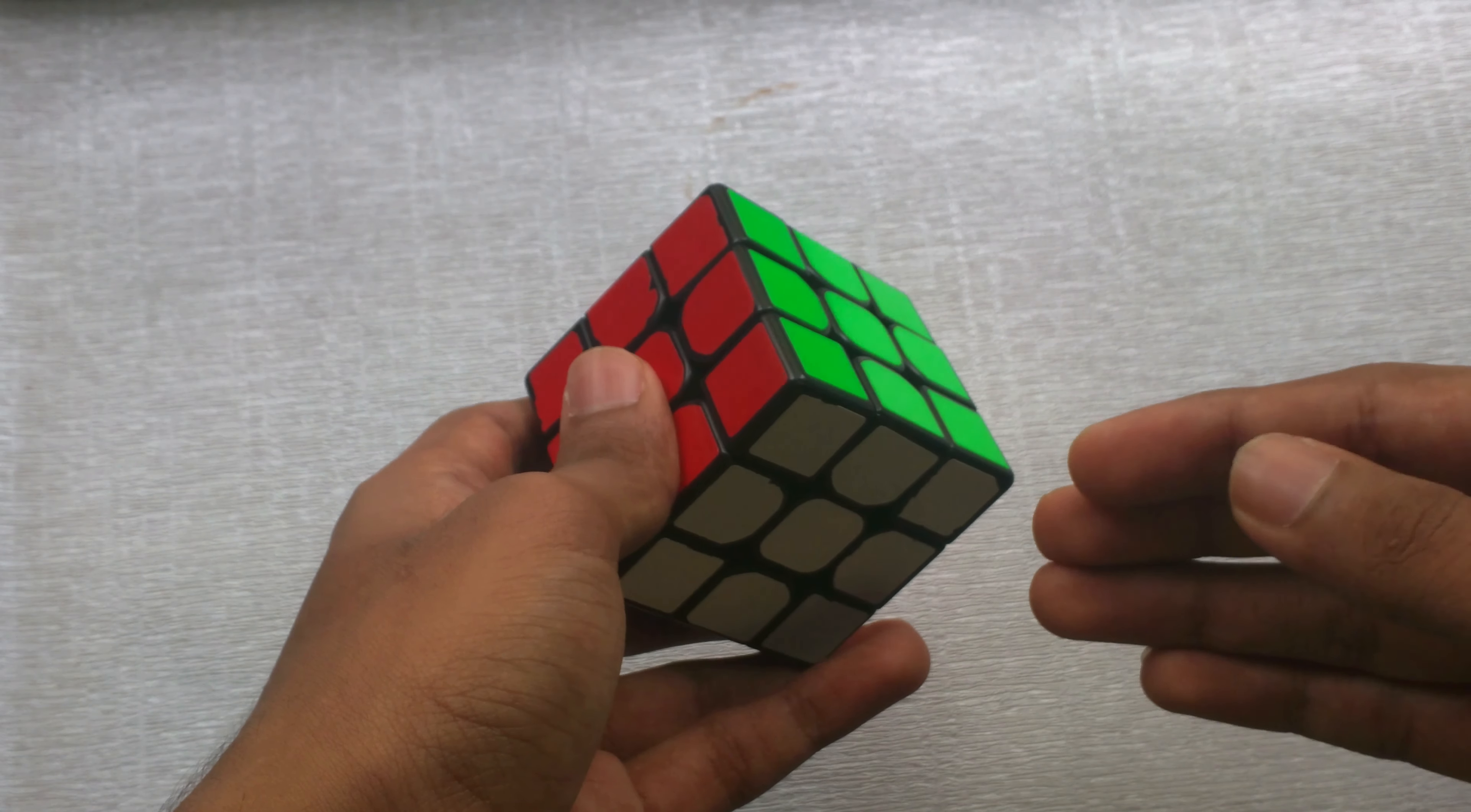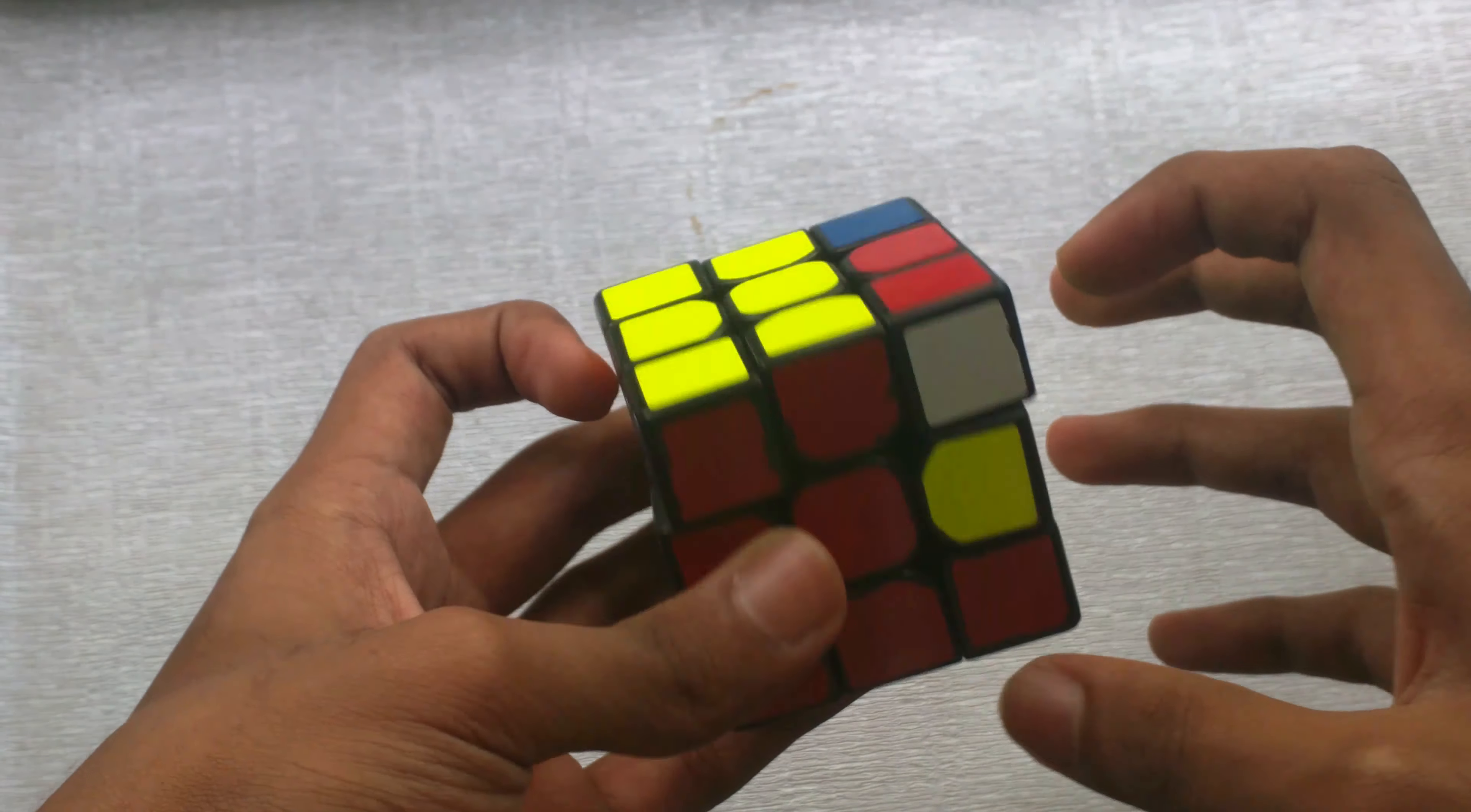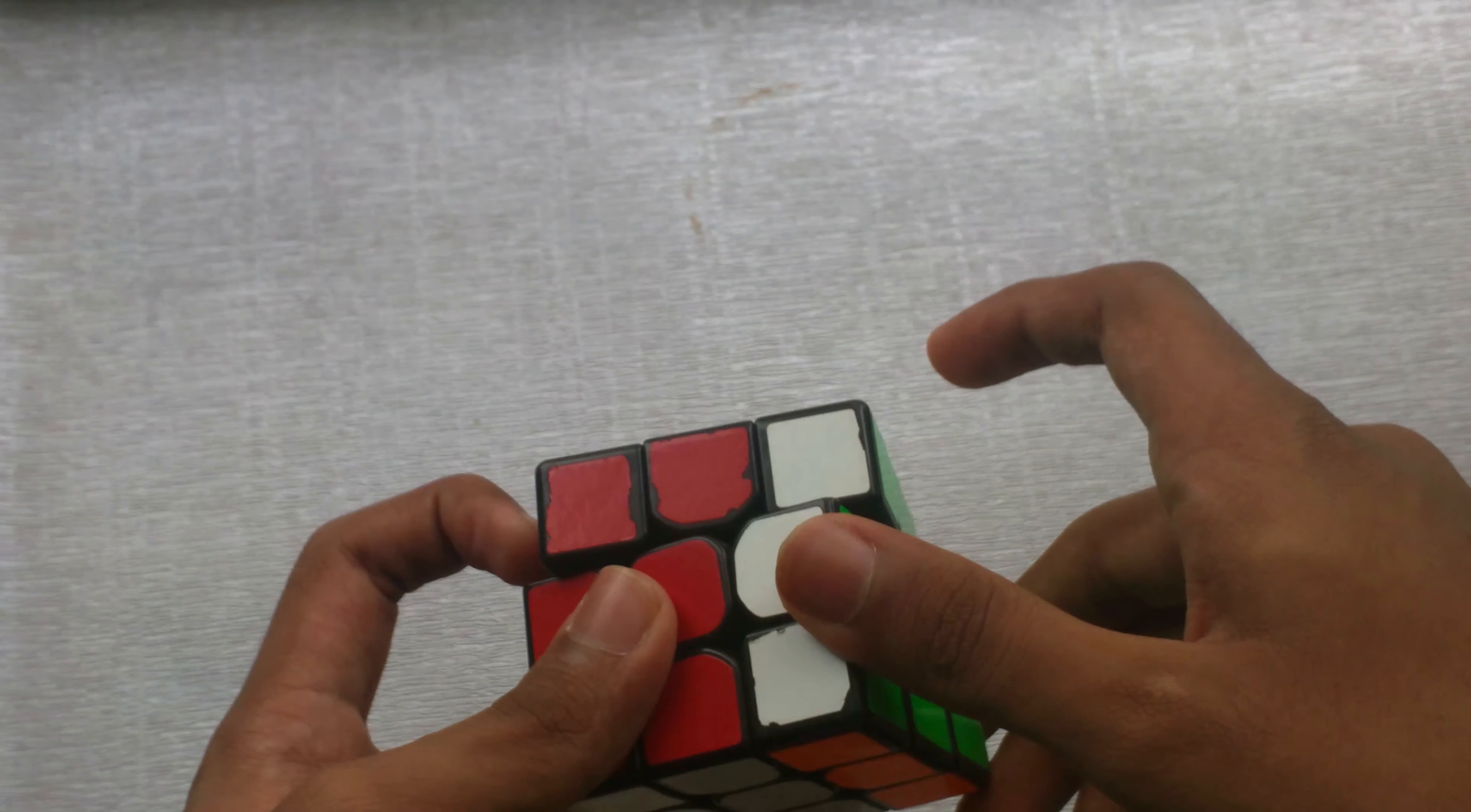So in the beginner's method, you would solve these corners first, then the edges. But with F2L, you would pair this up together like this. You'll pair both the corner and the edge and then you will just put both of them together in the slot like so.